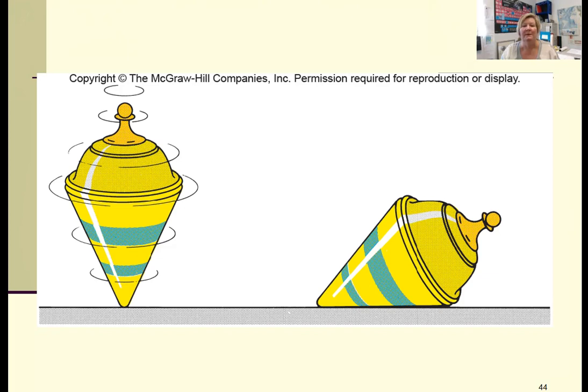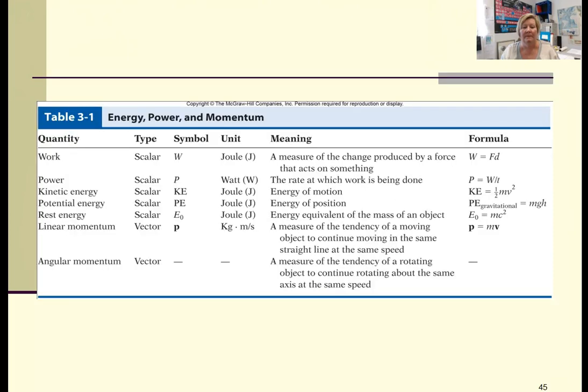A spinning top exhibits angular momentum. Here's a summary of the terms: work, power, kinetic energy, potential energy, rest energy—we haven't talked about rest energy, that'll be my next video—but we have linear and angular momentum. This is a very valuable little table. It tells you what the units are, the symbol, the meaning, and the formula. So you may want to keep this handy when completing your quiz.